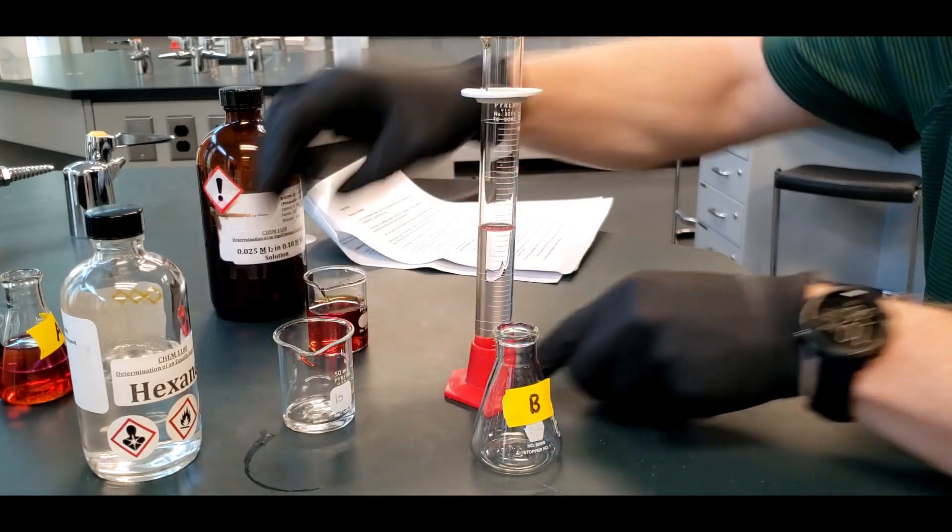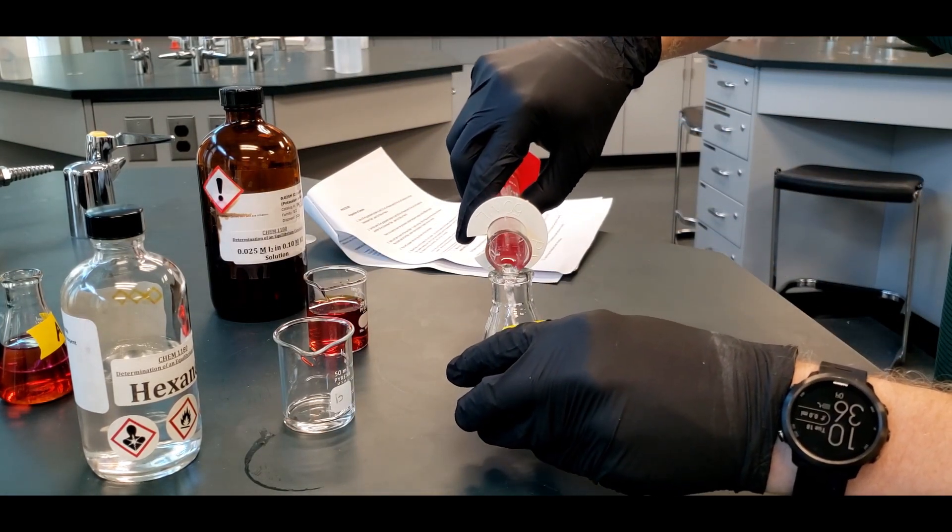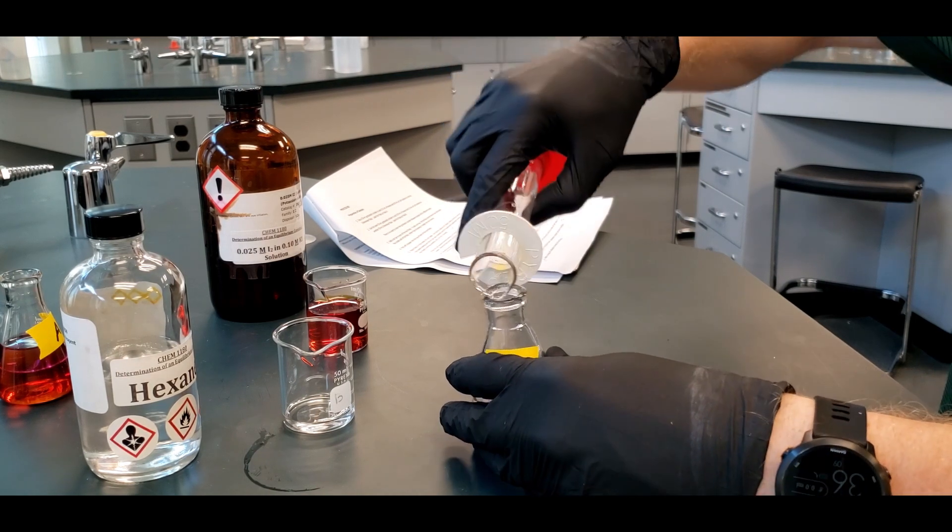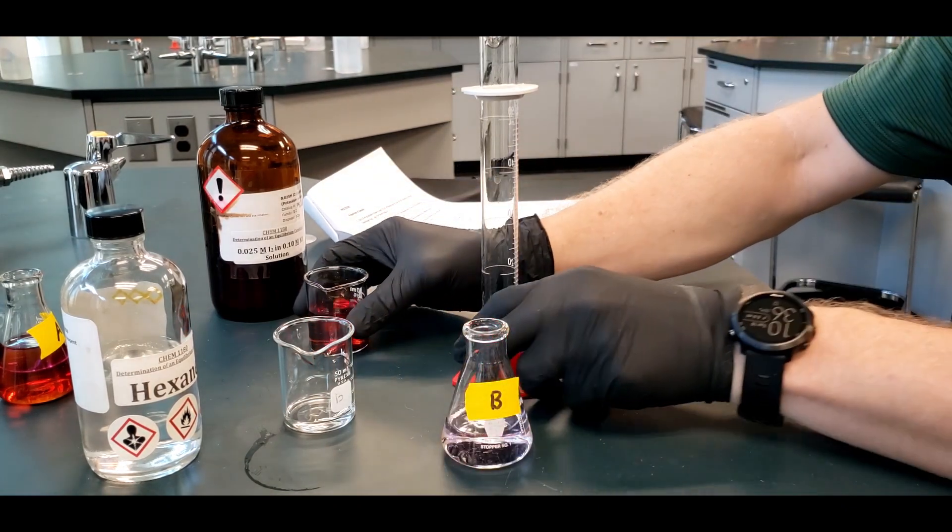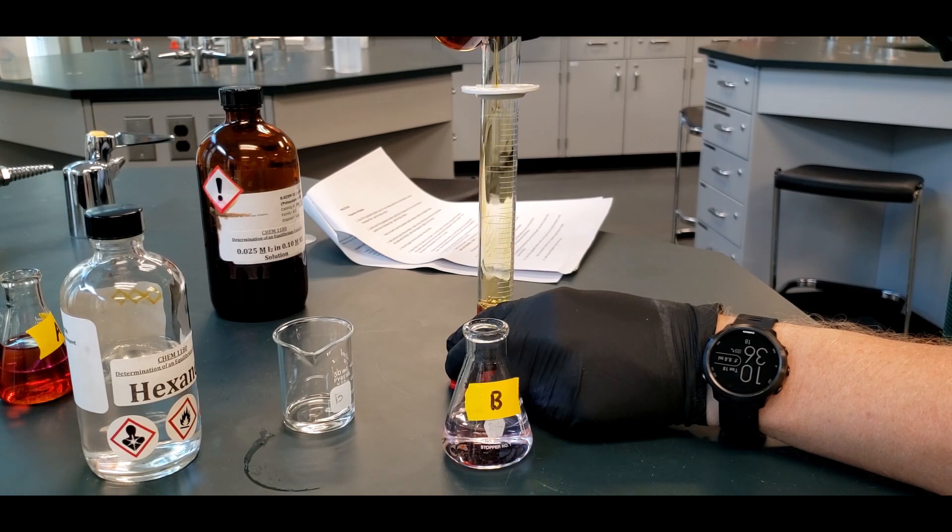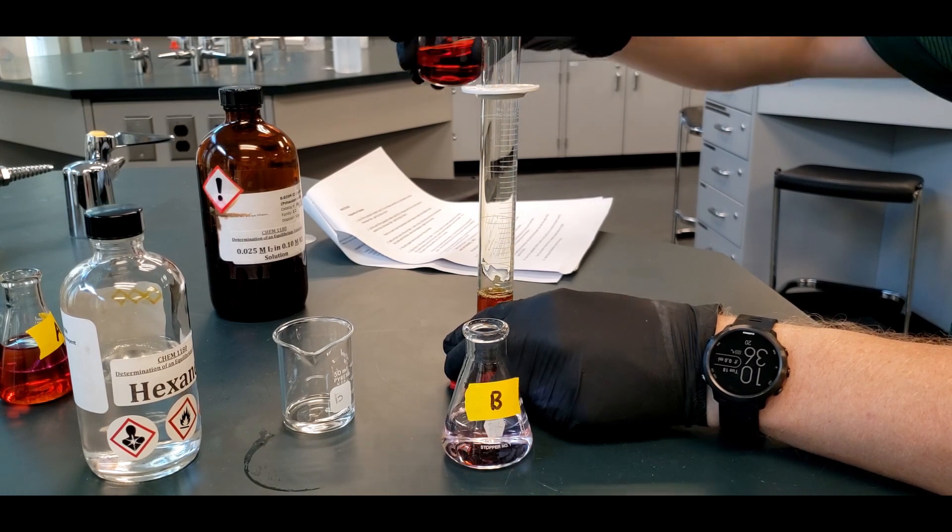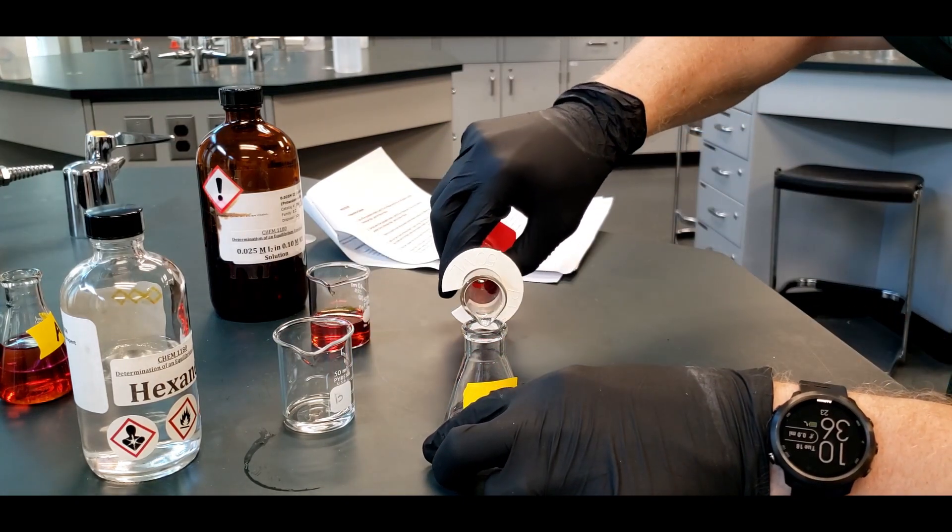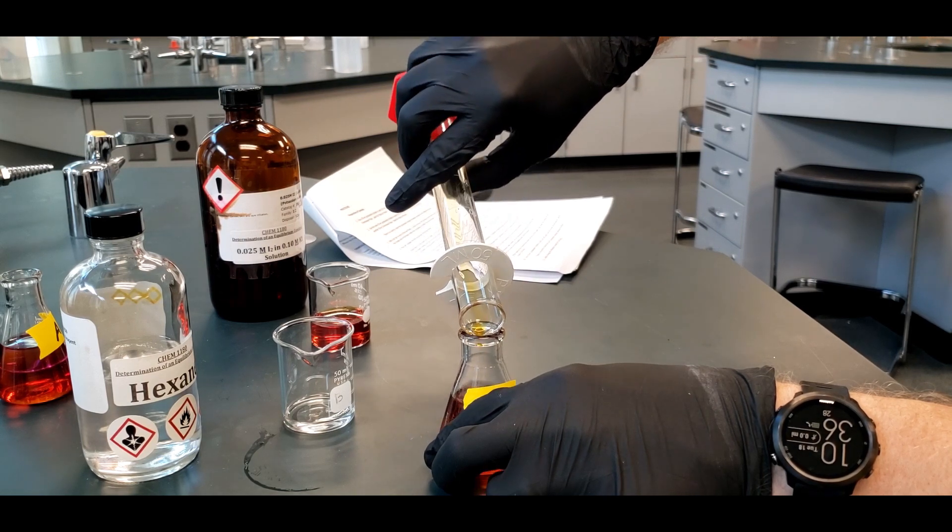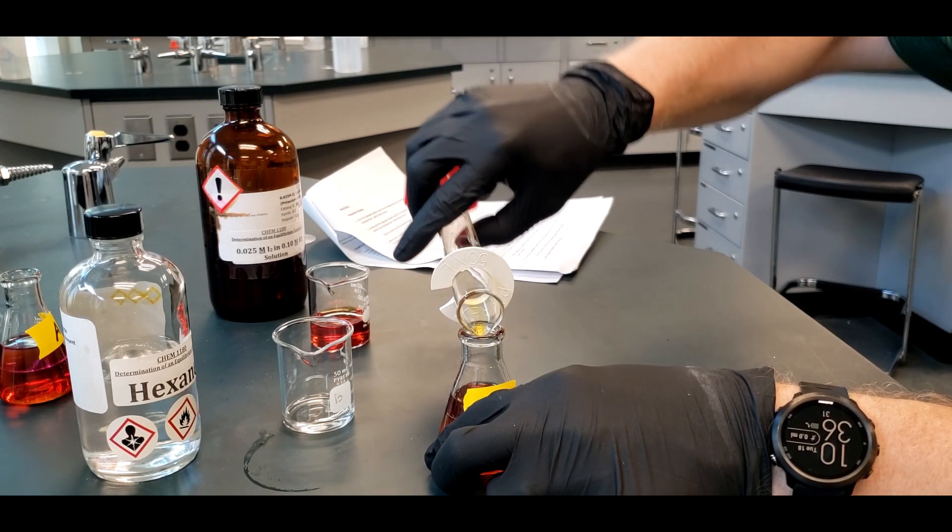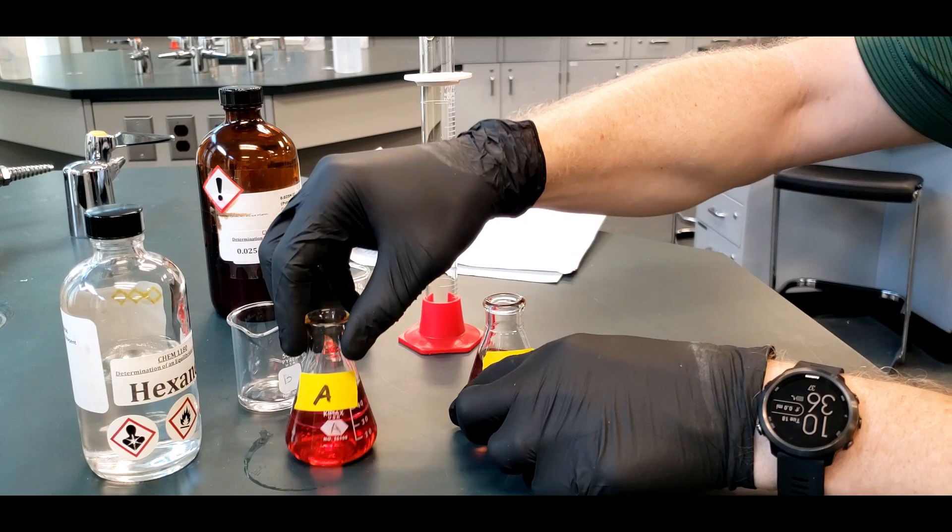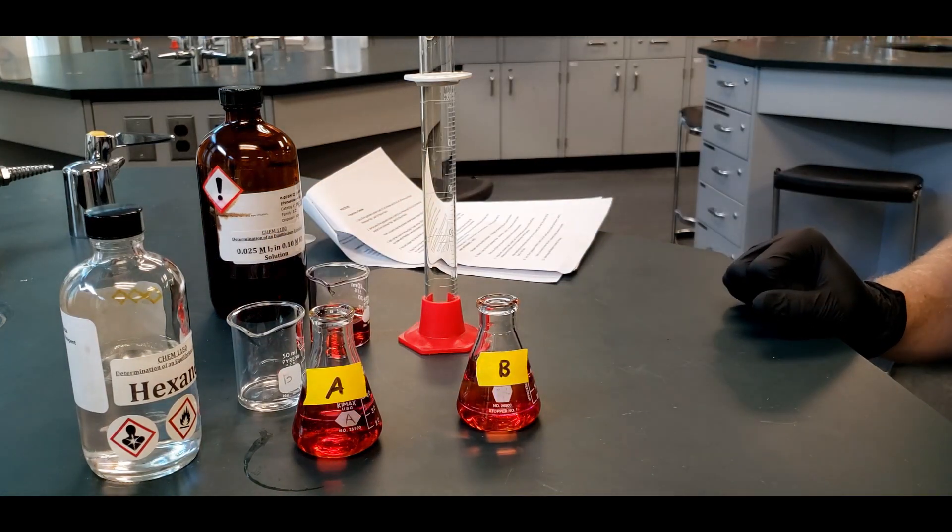So this is going to be 30 mL of the hexane. And as I said, you don't have to wash this out. A few drops of the solution that's left behind is not going to affect anything. You can see it's a little tinted because there's some of the iodine left in there. So we have our two mixtures, A and B, and we're ready to go on to step three.